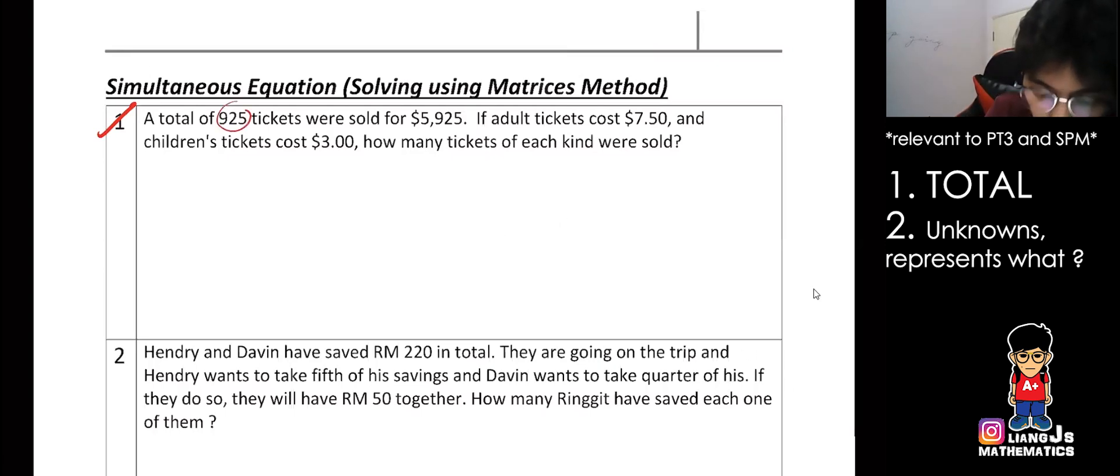A total of 925 tickets were sold for 5925. That's the total again. Can you see the two totals there? But you have to separate it very carefully. 925 is the number of tickets, 5925 is the price, the total sales. Now, if adult tickets cost 7.50 and children's tickets cost 3 ringgit, looks like you have the price already. Can you see I emphasize it? You have the price already.